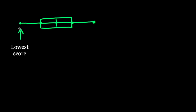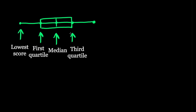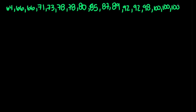This first dot represents the lowest score in the numbers given to us. This next dot represents the first quartile — we will get more into this in a minute. This next dot represents the median of the range of numbers given to us. The fourth dot represents the third quartile, and this final dot represents the highest score.